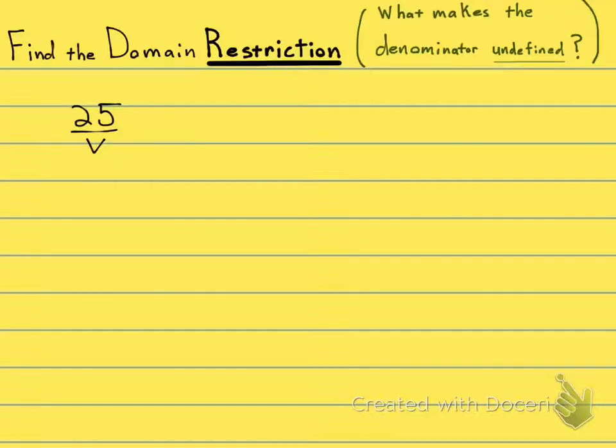Find the domain restriction, or another way to say it, find all numbers for which the rational expression is undefined. Well, the only thing we know right now that makes a fraction undefined is if we have a zero in the denominator.